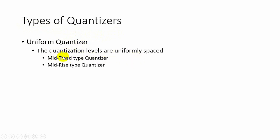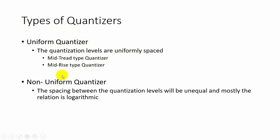Two categories of uniform quantizer are mid-tread type and mid-rise type. The second type of quantizer is the non-uniform quantizer, where the spacing between quantization levels is not equal — mostly the relationship is logarithmic.